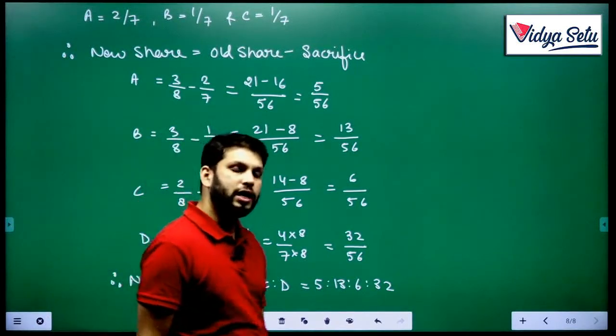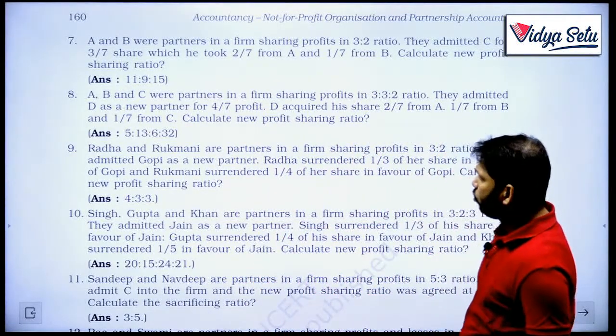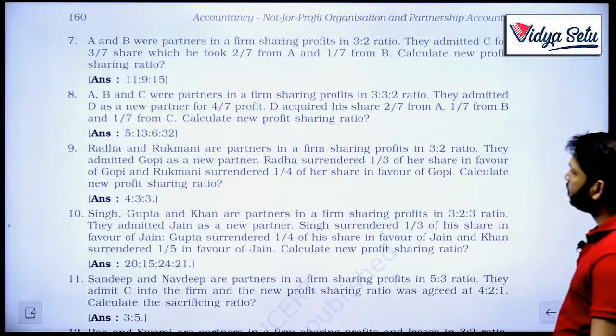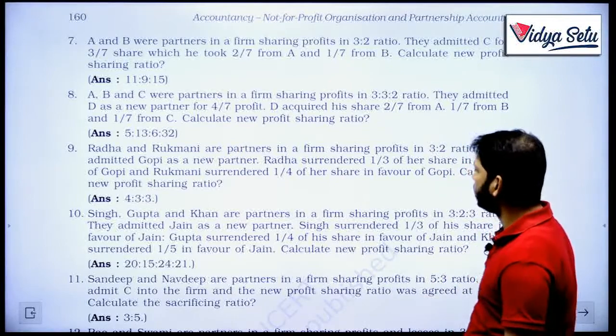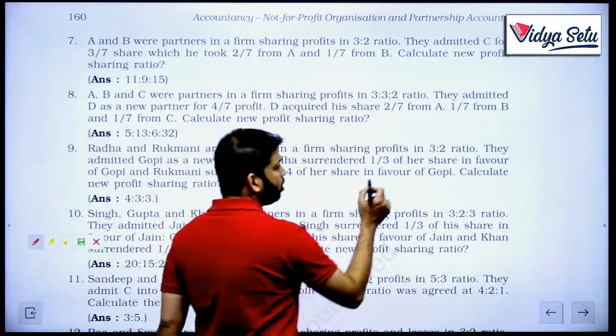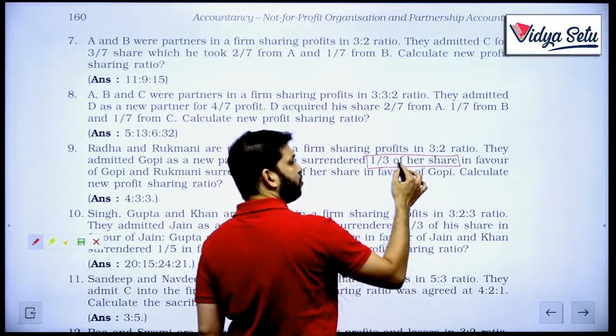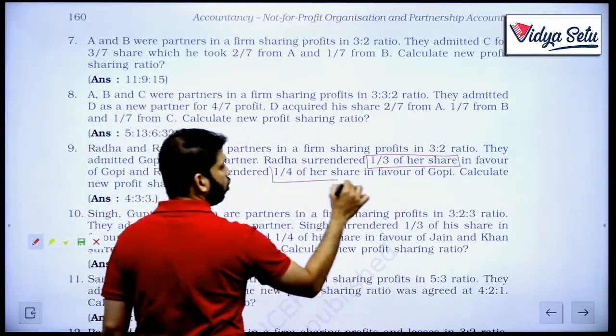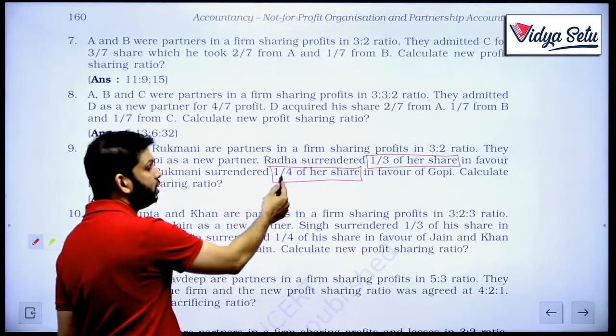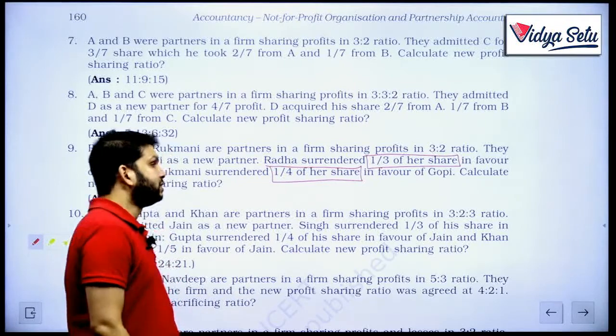Let us move on to our next question, question number 9. Radha and Rukmani are partners in a firm sharing profits in the ratio of 3 to 2, they admitted Gopi as the new partner. Radha surrendered 1/3 of her share in favour of Gopi and Rukmani surrendered 1/4 of her share in favour of Gopi. 1/3 please be very very very careful, 1/3 of her share. So whatever was her share, her share was 3/5, of 3/5 one-third, so multiply. Here also 1/4 of her share. Wherever you have to be very very careful when you read the question. So 1/4 of her share means 2/5 multiplied by 1/4, whatever is the answer that is the amount that she is sacrificing.